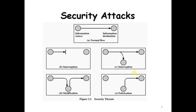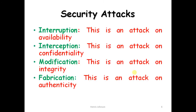In the five diagrams of security attacks: Interruption is an attack on availability. Interception is an attack on confidentiality. Modification is an attack on integrity. Fabrication is an attack on authenticity.